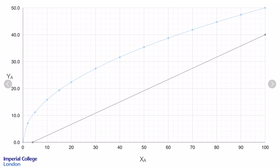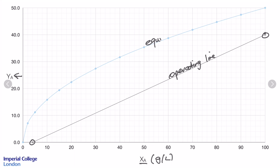To begin with, we draw our operating diagram for A. We have our concentration of A in the aqueous stream in grams per litre on one axis and our concentration of A in the solvent phase on the other. This is our operating line, drawn by solving the mass balance over the whole system, which defines the two endpoints, and then we draw it as a straight line. This is our equilibrium curve, obtained from our expression for MA, plotted for various values of XA.